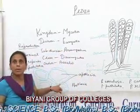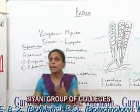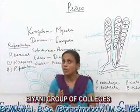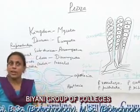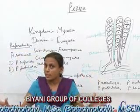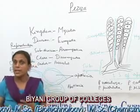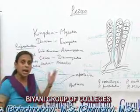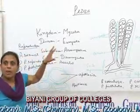Moving towards the vegetative mycelium of Peziza, as seen in the diagram, the mycelium is profusely branched, very well developed, septate, and multi-nucleate. The hyphae of the mycelium penetrate inside the substratum and absorb nutrients, minerals, and water from the soil.